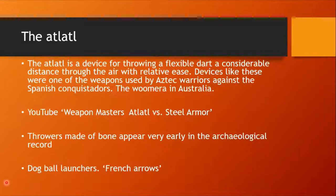Now the atlatl is a device for throwing a flexible dart a considerable distance through the air with relative ease. Devices like these were one of the weapons used by the Aztecs against the Spanish conquistadors. They can be found in other cultures, e.g. the woomera used by Aboriginal peoples of Australia, and this YouTube video Weapon Masters Atlatl vs Steel Armor is great fun and you do get to meet Atlatl Bob, one of the legends in the atlatl throwing community. Throwers made of bone appear very early in the archaeological record, and of course bone survives but wooden darts generally don't.